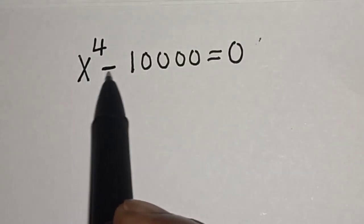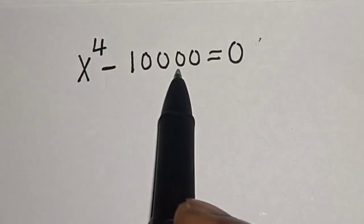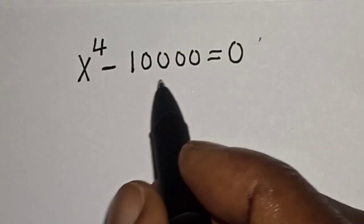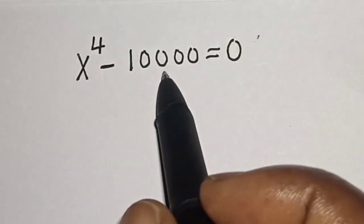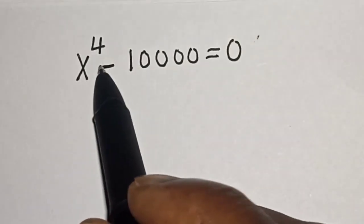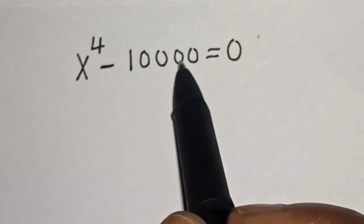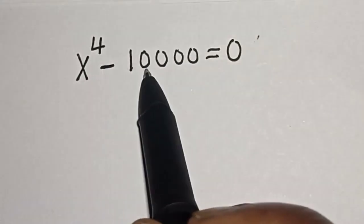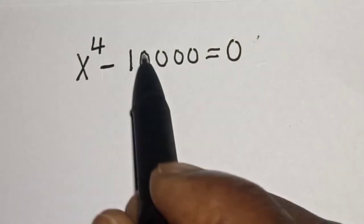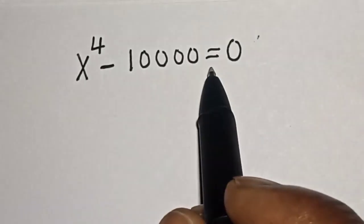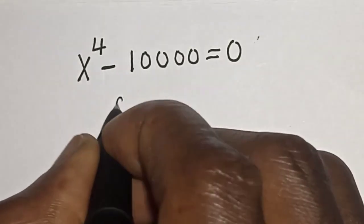x raised to power 4 minus 10,000 is equal to 0 — what is the value of s? Hi everyone, welcome to my class. In this class we want to find the value of s from this equation: s raised to power 4 minus 10,000 is equal to 0. But before we proceed, please don't forget to like, share, comment, and subscribe.